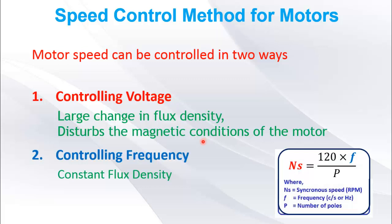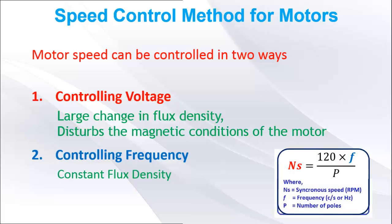The most efficient method of changing speed is by controlling supply frequency, as supply frequency is directly proportional to motor speed in RPM. The flux density also remains constant. But wait, only changing the frequency of motor to control its speed will not apply on all loads.